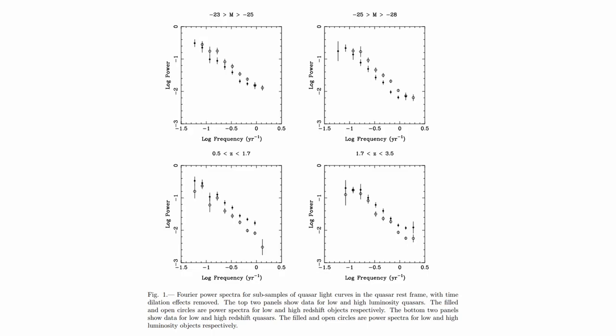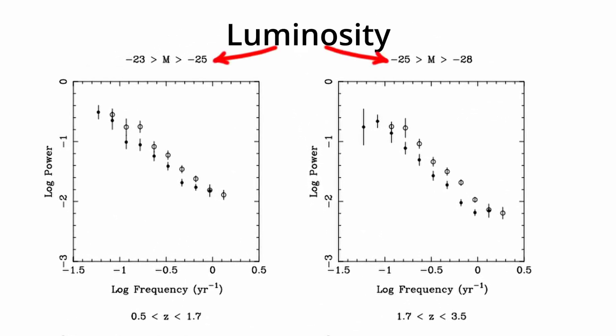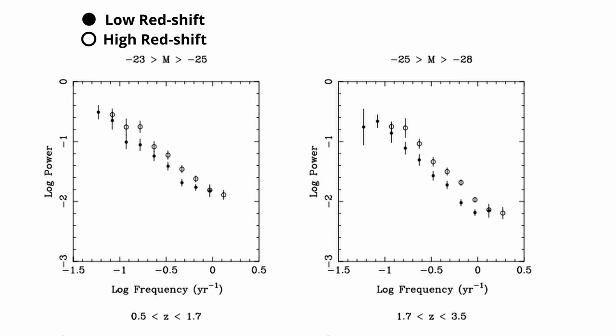In this graph, we can see the power spectra of samples of quasar light curves binned according to the redshift and luminosity. Each point represents the average value of all the contributions to the frequency interval. The top two panels show results for two luminosity bins, with power spectra for low and high redshift quasars being represented by filled and open circles.